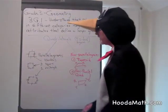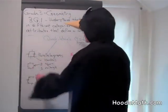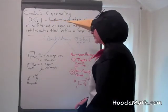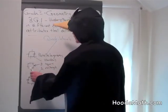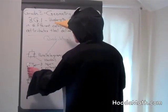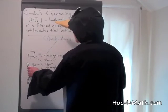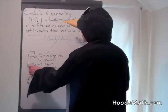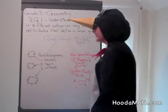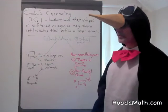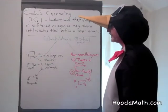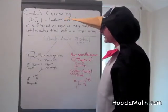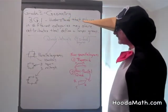A square has four equal sides and opposite sides are parallel. Additionally, each angle is 90 degrees in a square. A square is a specific kind of rhombus.